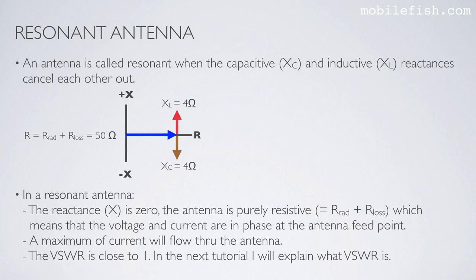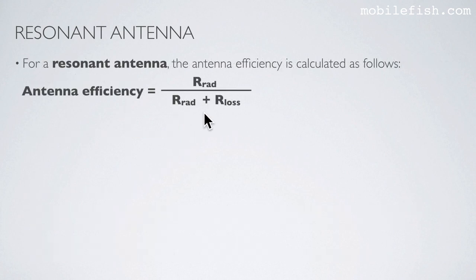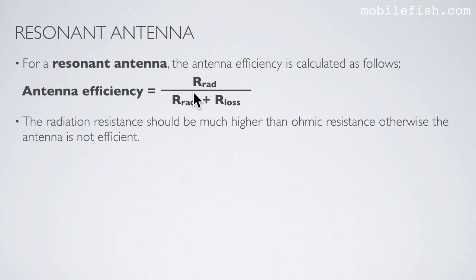In a resonant antenna the reactance is zero, meaning the antenna is purely resistive. The voltage and current are in phase at the antenna feed point, and a maximum of current will flow through the antenna. The VSWR is close to 1. For a resonant antenna, the antenna efficiency is calculated with the formula: efficiency = Rr / (Rr + Rohm). The radiation resistance should be much higher than the ohmic resistance; otherwise the antenna is not efficient.